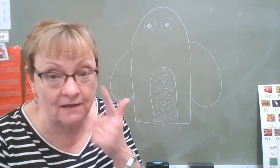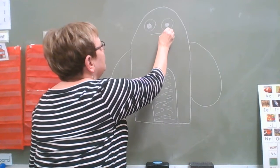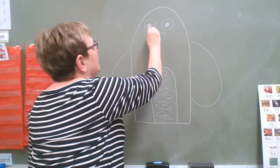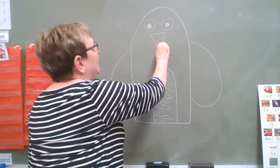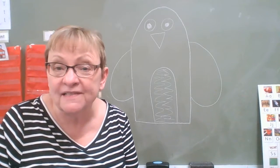Now he needs a beak, which is kind of like his nose. I'm going to do a triangle, but I'm going to do it upside down, so the pointy part is down. And that's his nose, or his beak.